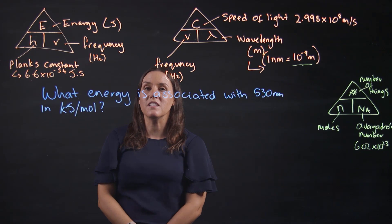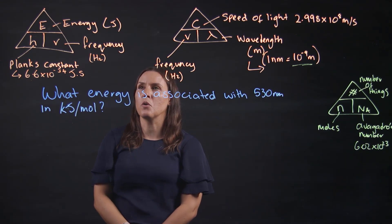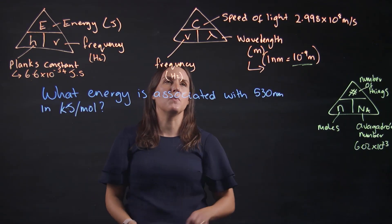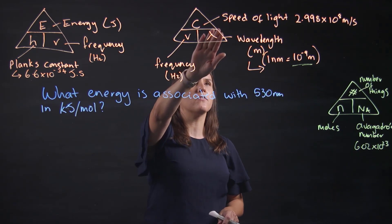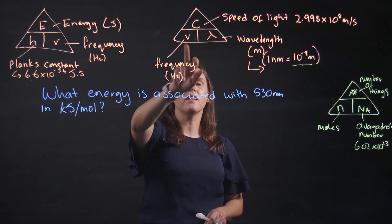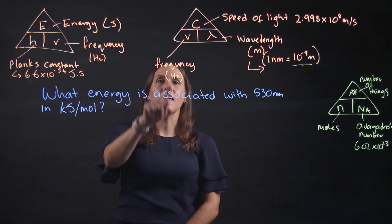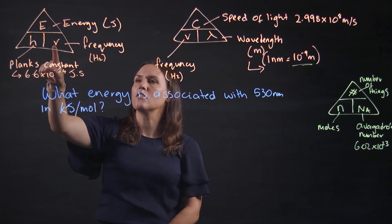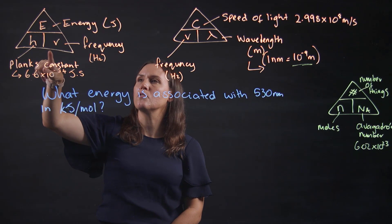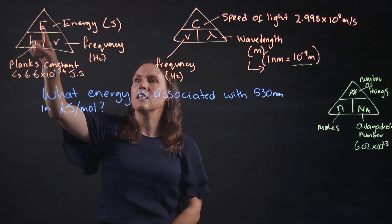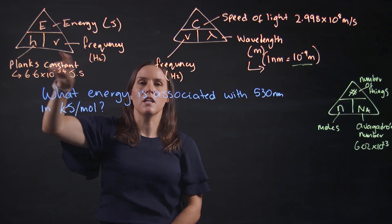There are three formulas that we require to do this problem. The first one is the formula that uses the speed of light and relates wavelength to frequency. The next one carries the frequency across to the Planck's constant relationship. Energy divided by Planck's constant equals your frequency.